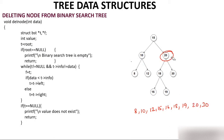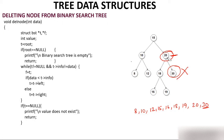The in-order successor of 20 is 30. The moment I want to delete 20, that place will be taken by 30 — the in-order successor. So 30 will come over here. Since 30 is a node having no child, I will first delete 30 and then insert 30 in place of 20.